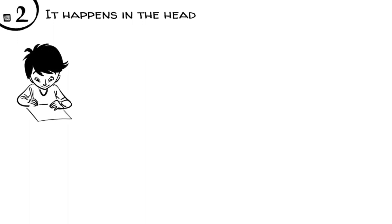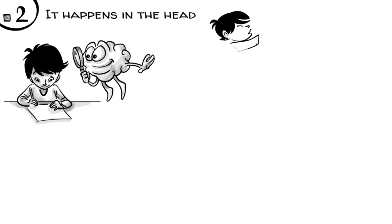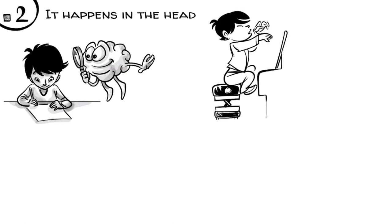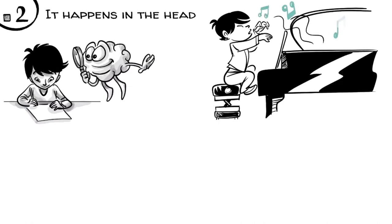It happens in the head. Whatever is on paper is merely a representation of mathematical thinking that happens in the brain, just like musical notes. What is on paper is just a representation of music that actually happens when someone plays the piano.